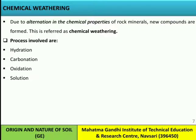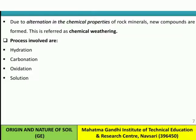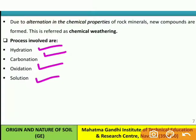Now let's discuss chemical weathering. Due to alteration in the chemical properties of rock minerals, new compounds are formed — this is referred to as chemical weathering. The main distinction is that in physical weathering the properties of the rock do not change, while in chemical weathering the chemical properties of the rock do change. The processes involved are hydration, carbonation, oxidation, and solution.